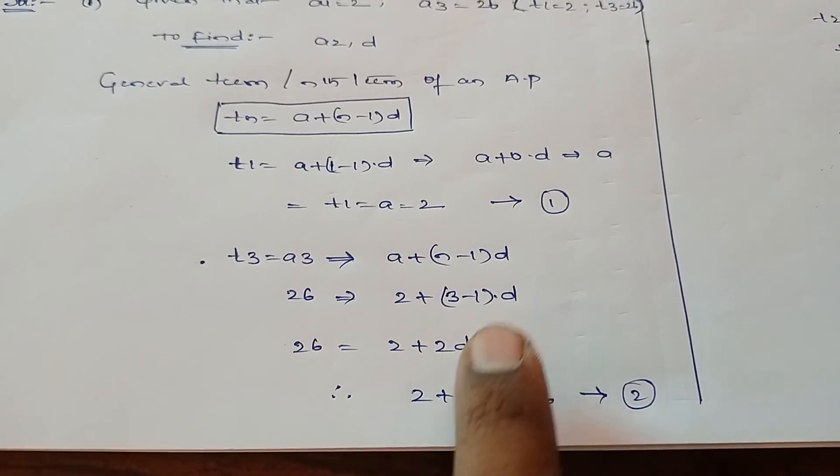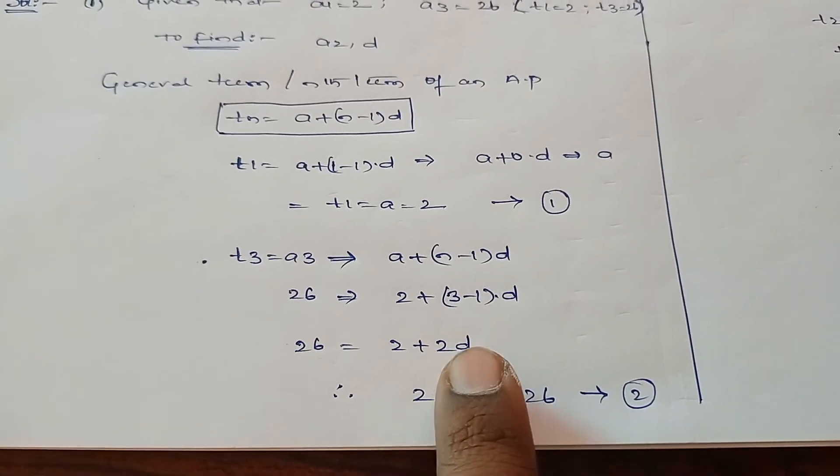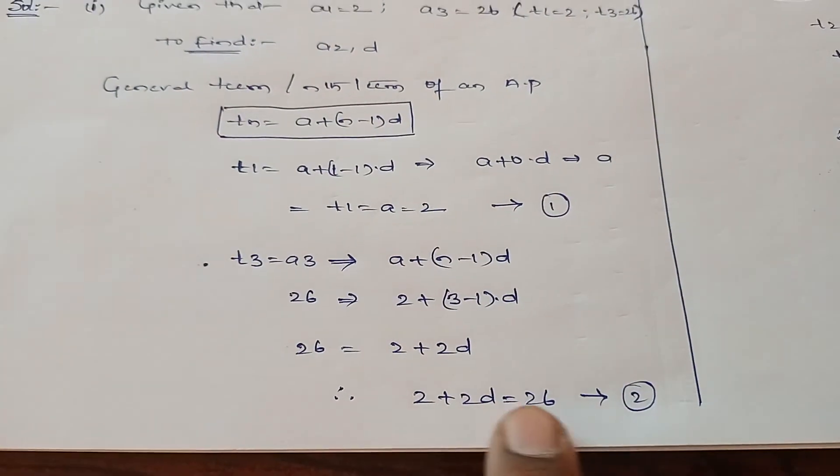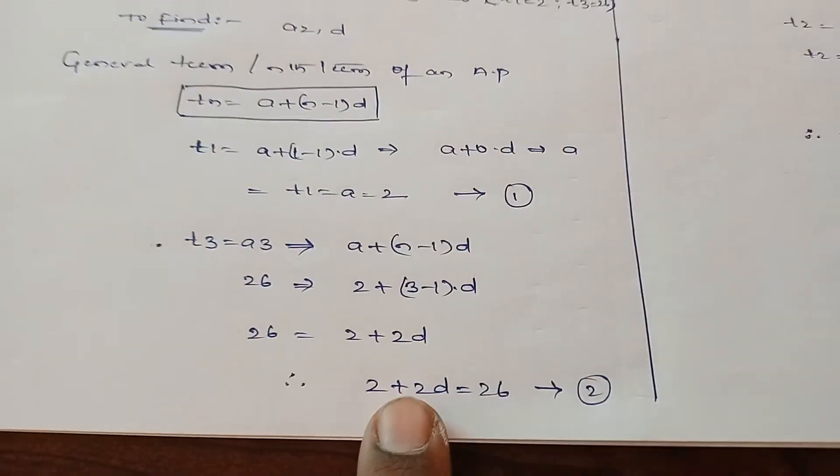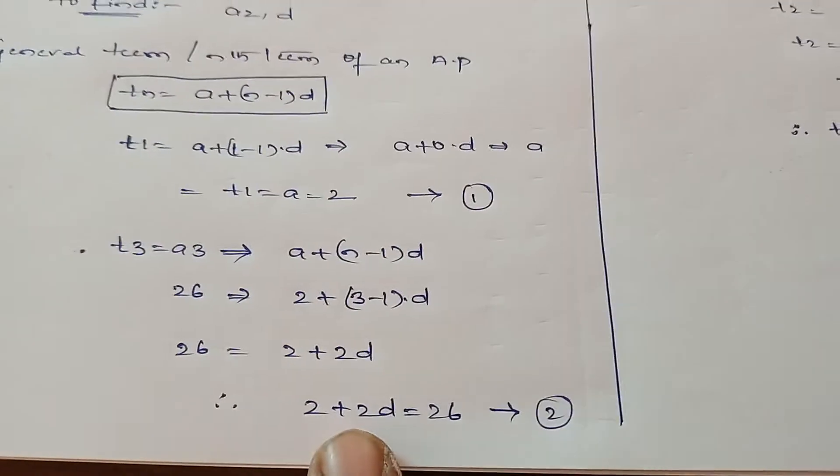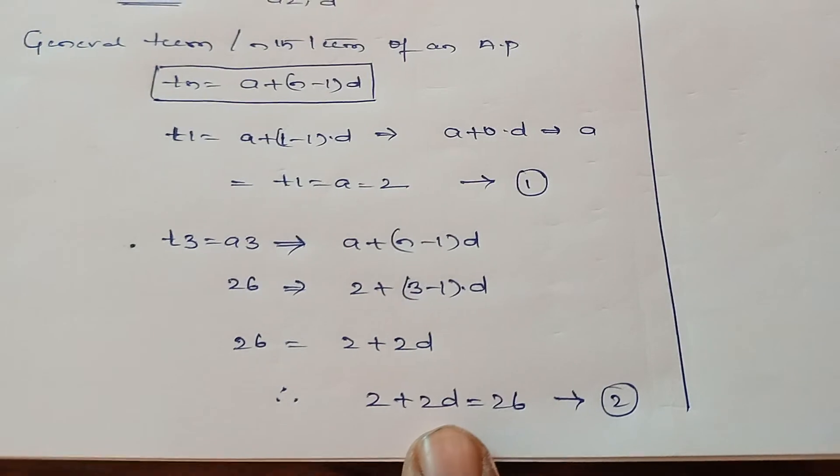Simplify: 26 equals 2 plus 3 minus 1 into d. That's 2 plus 2d. So 2 plus 2d equals 26. Transpose the terms from left-hand side to right-hand side so that d will be the subject. Find the value of d.